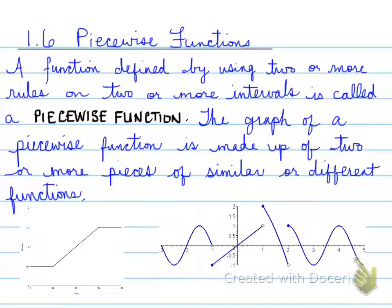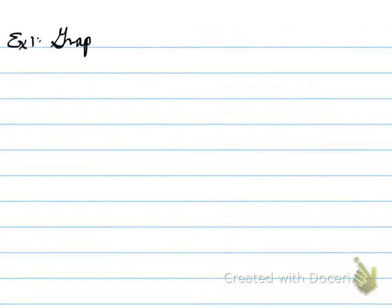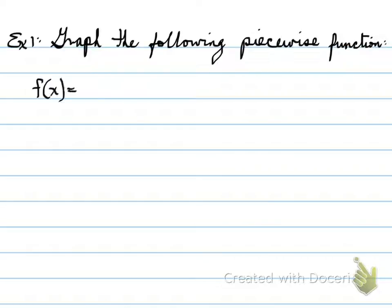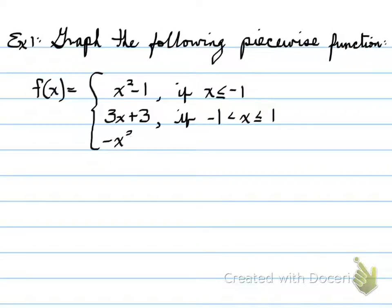So let's move forward. Example 1: graph the piecewise function f(x) equals x squared minus 1 if x is less than or equal to negative 1, 3x plus 3 if x is between negative 1 and 1, and negative x squared plus 1 if x is greater than 1.